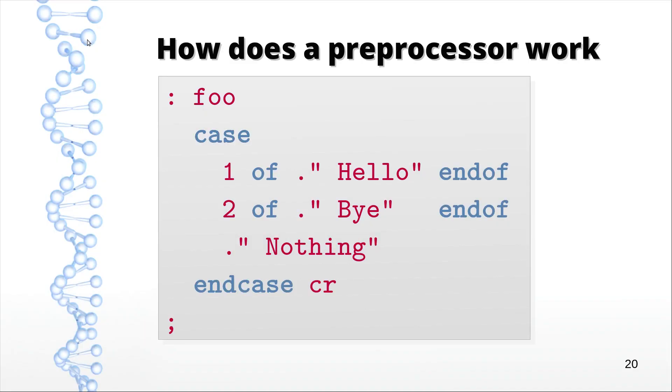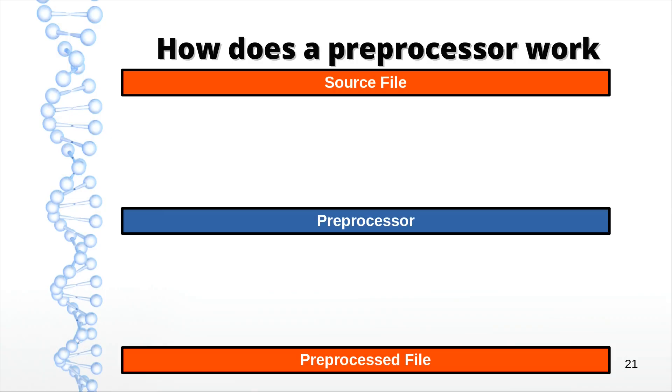In this simple program, those keywords are bold and blue. It prints hello if we feed it a one, bye if we feed it a two, and otherwise nothing. The preprocessor breaks the program up into tokens, single words. Most words pass the preprocessor unchanged.